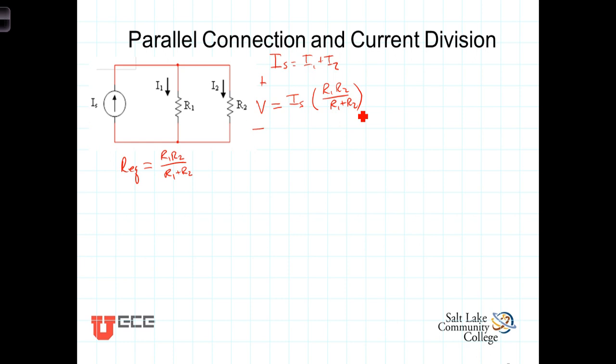Now using that expression for V, let's write an expression for I1. I1 is simply equal to the voltage across R1 divided by R1, which is I sub S times R1 R2 over R1 plus R2 divided by R1. This R1 cancels that R1 and we're left with I1 equals I sub S times R2 over R1 plus R2.